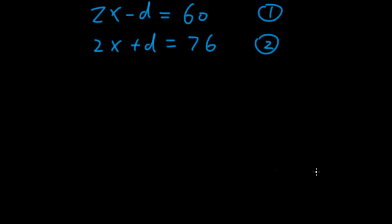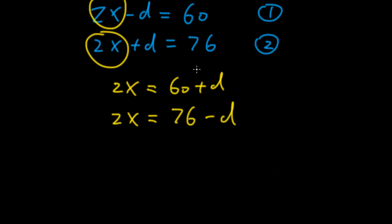We can also solve this system by observing some relationships, some numbers that are easy to cancel. From the first equation, we have 2x and 2x here. So let's move these Ds to the right-hand side and leave 2x on the left-hand side. So the first equation becomes 2x equals 60 plus D. The second equation becomes 2x equals 76 minus D. Now 60 plus D is equal to 2x. 76 minus D is also equal to 2x.